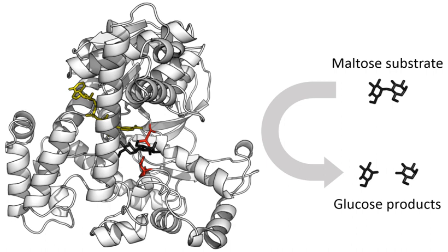Flavin and heme cofactors are often involved in redox reactions. Enzymes that require a cofactor but do not have one bound are called apoenzymes or apoproteins. An enzyme together with the cofactors required for activity is called a holoenzyme. The term holoenzyme can also be applied to enzymes that contain multiple protein subunits, such as the DNA polymerases, where the holoenzyme is the complete complex containing all the subunits needed for activity.